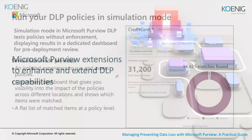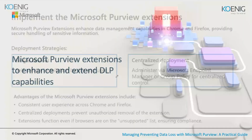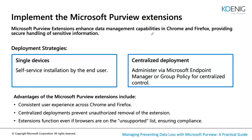One more feature: DLP now includes extension options. You can add the Microsoft Purview extension for Chrome and Firefox. This brings DLP policy to your browser — if you're sharing sensitive information in a browser and the extension is installed, it syncs with your Microsoft 365 DLP policies and prevents data sharing there too. You can deploy this extension via centralized tools like SCCM or other software distribution options.